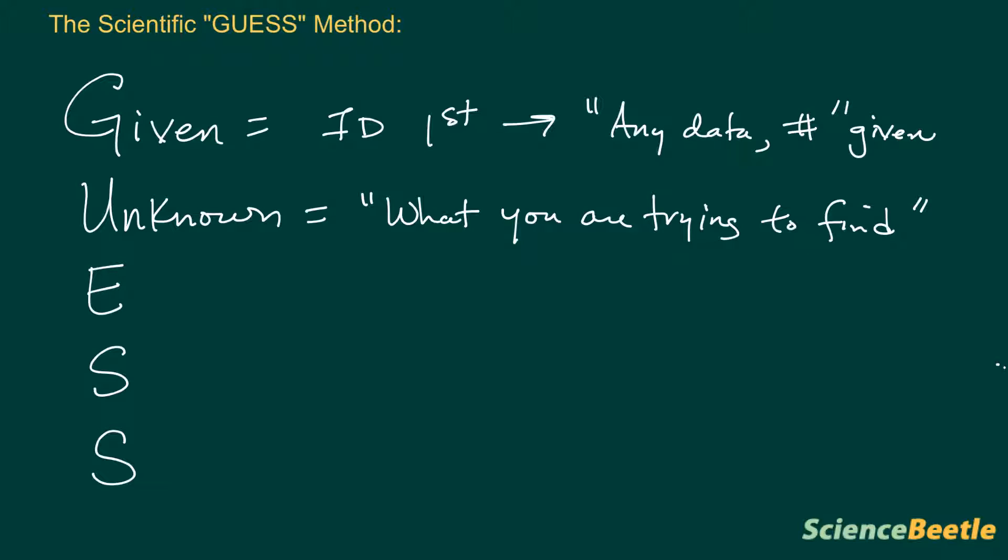Once you know the given, once you know the unknown, the next thing you want to do is identify the correct equation. You want to identify the correct one for the problem that you've got depending on the variables you have.